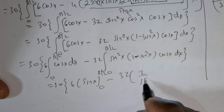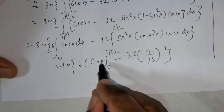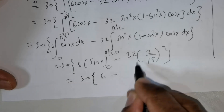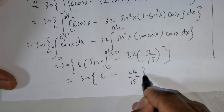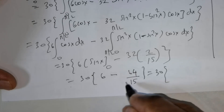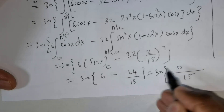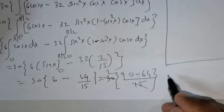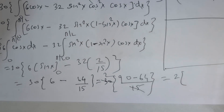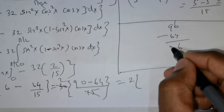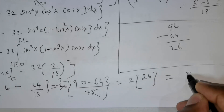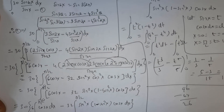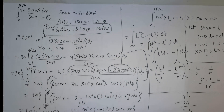Taking this value and substituting back, we have 32 times 2 over 15, which is 64 over 15. So the full expression is 30 times (6 minus 64 over 15). Taking 15 as LCM: 30 times (90 minus 64) over 15. Since 15 divides 30 twice, this equals 2 times (90 minus 64), which is 2 times 26, equal to 52. So the answer to this integral is 52. I hope you enjoyed this — thank you everybody!